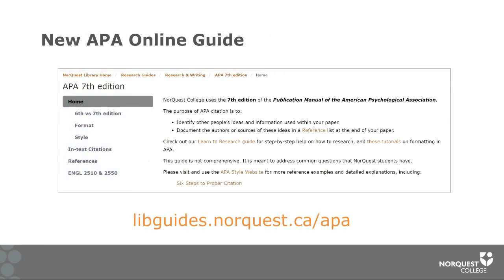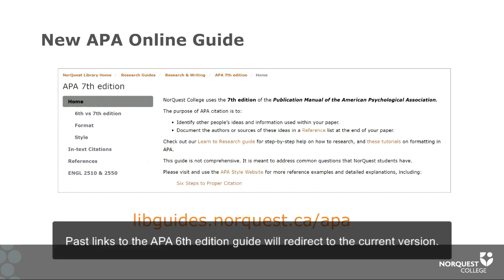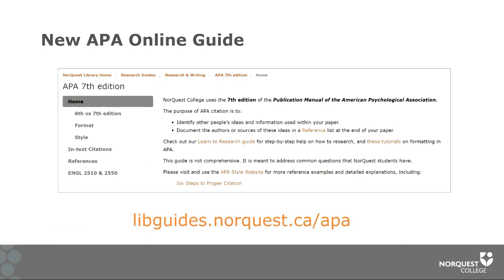The library also has a new APA online guide available for APA 7. This guide is similar to our APA 6 guide with a few style changes made for greater accessibility and clarity. In this guide you'll find many examples for how to cite, how to reference, and how to do in-text citations for your sources. I will do a brief demonstration of the guide.